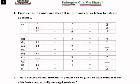The examples are: 6 divided by 2 is equal to 3; blank divided by 5 is equal to 2; 5 into 2 is equal to 10; 10 divided by blank is equal to 5; 20 divided by 5 is equal to 4.